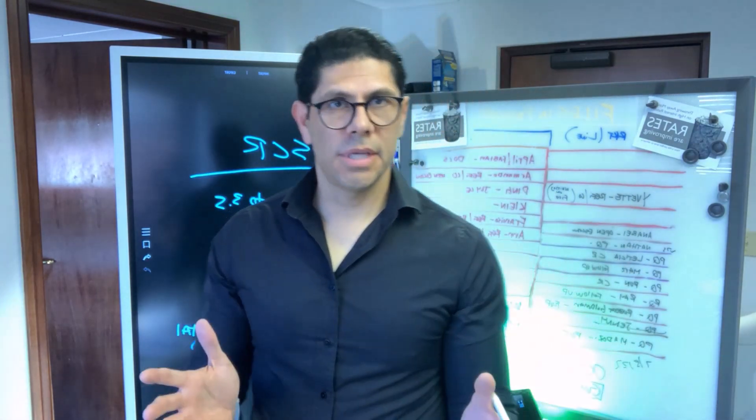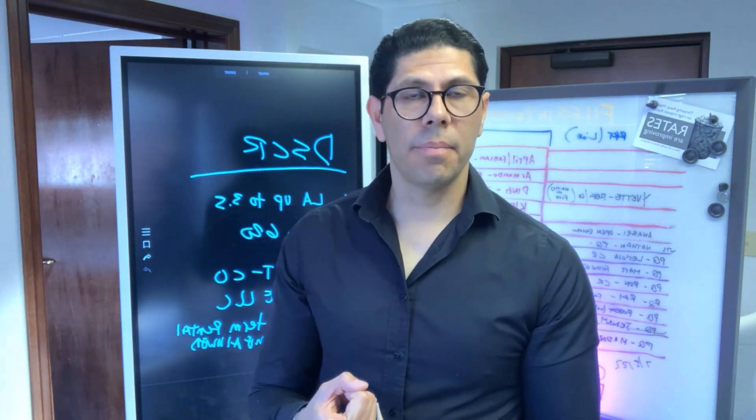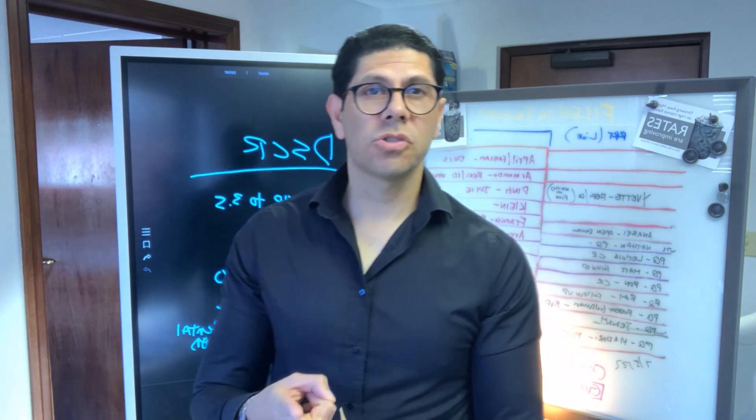Let's go over what the program entails. Number one, you can go as high as 3.5 million on this program. Number two, you can have a minimum FICO score as low as 620.